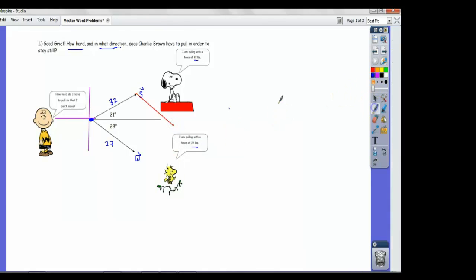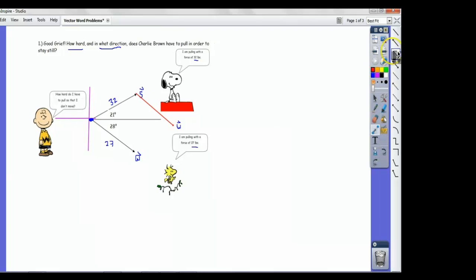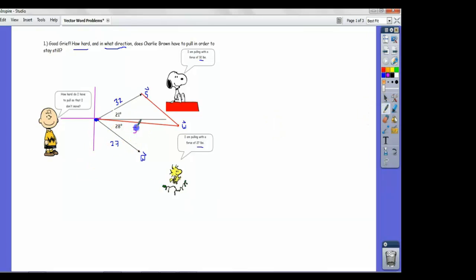If we add Woodstock's vector to Snoopy's visually or geometrically, this is what it looks like. It doesn't matter where vectors are in the plane as long as they have the same magnitude and direction. If I situate Woodstock's vector so that its tail is at Snoopy's head, then this resulting vector in red is Snoopy's vector plus Woodstock's vector. That represents what it feels like to Charlie Brown. He feels like there's somebody pulling in this direction, S plus W, at this angle.